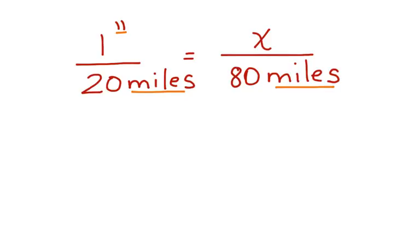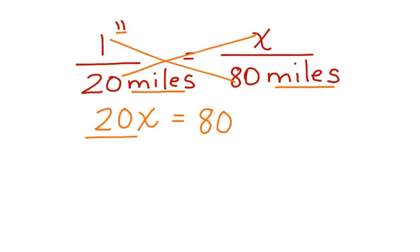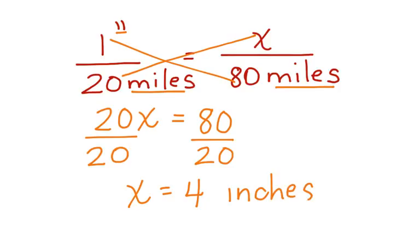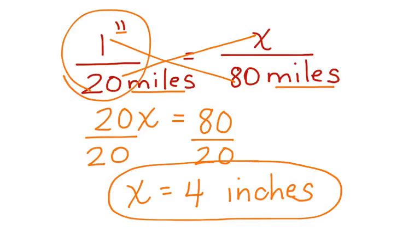Now we can cross-multiply and solve this problem. 20 times x is 20x. 1 times 80 equals 80. Divide both sides by 20. And x is equal to 4. 4 what? 4 inches. Given this scale, 80 miles on a map would be represented by 4 inches.